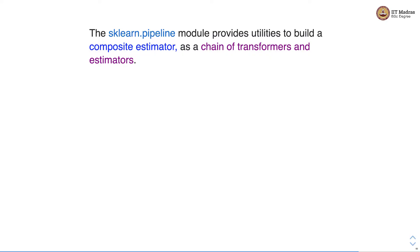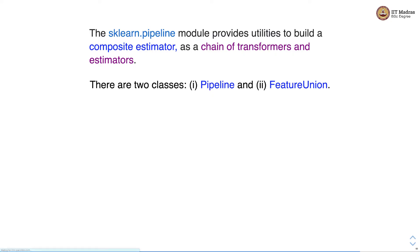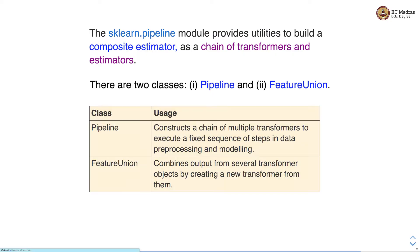The sklearn.pipeline module provides utilities to build a composite estimator, which is a chain of transformers and estimators. There are two classes: pipeline and feature union. The pipeline class constructs a chain of multiple transformers to execute a fixed sequence of steps in data pre-processing and modeling. The feature union, on the other hand, combines output from several transformer objects by creating a new transformer from them.